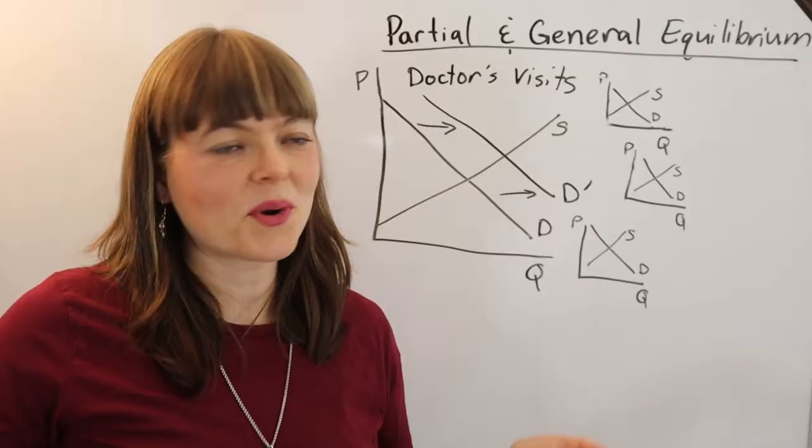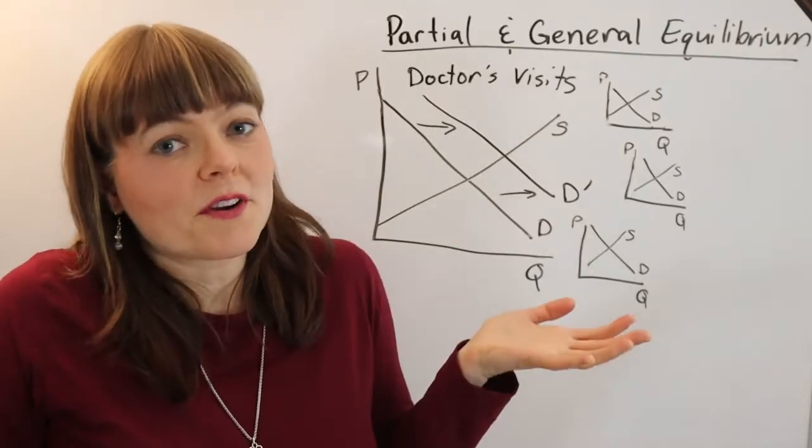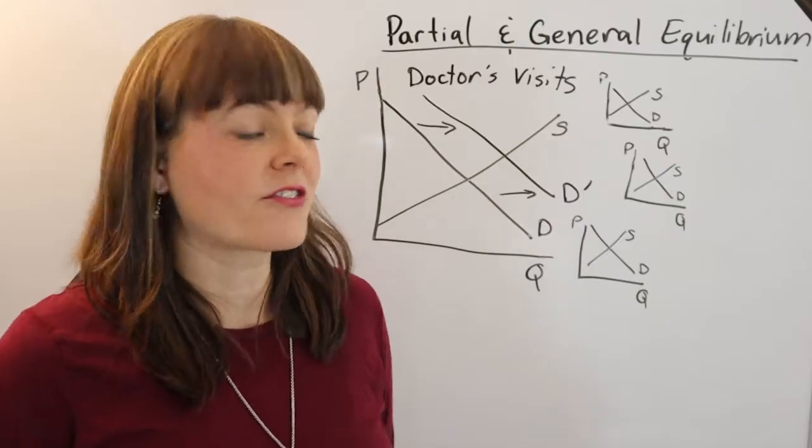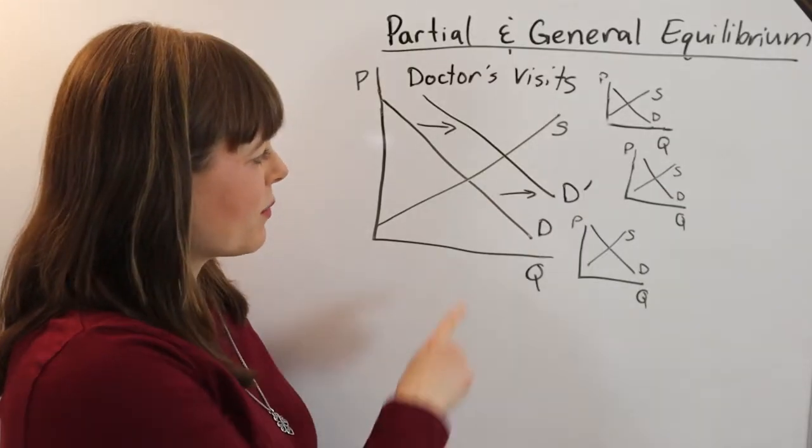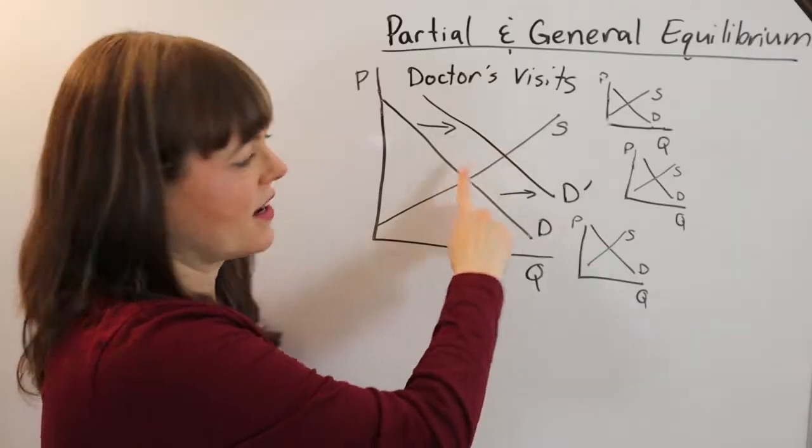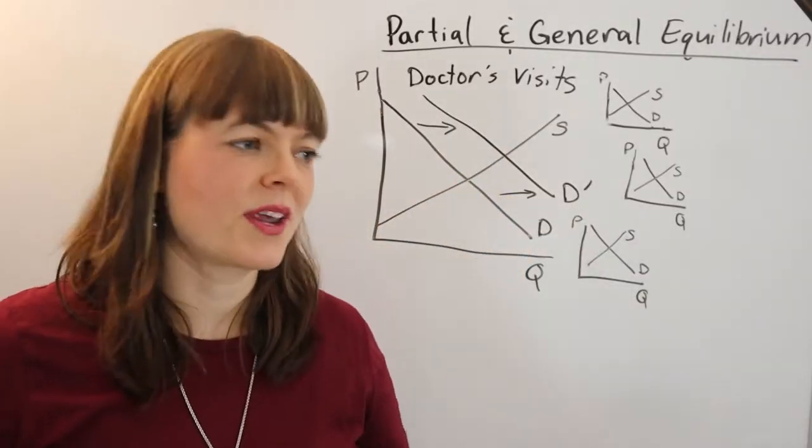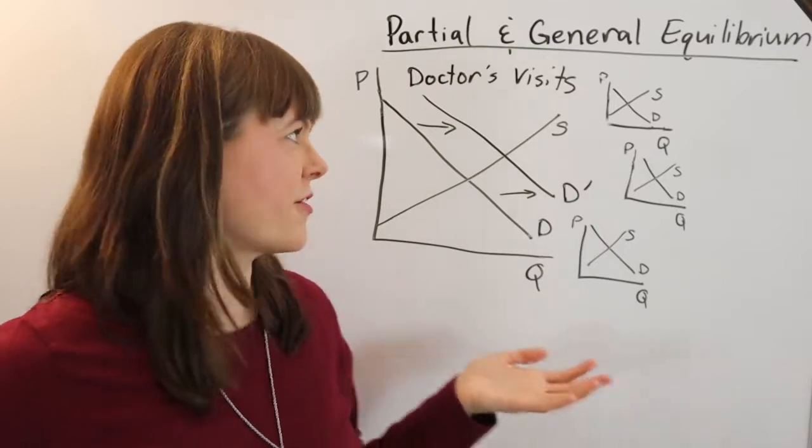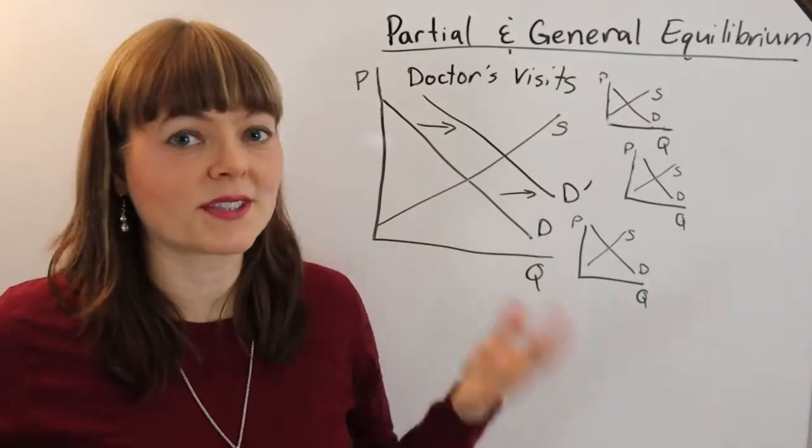An econ 101 answer to what would have happened to the price and quantity of doctor services after Medicare was introduced would say there's going to be an increase in price and an increase in quantity between 1964 and 1965 after that Medicare bill was introduced.